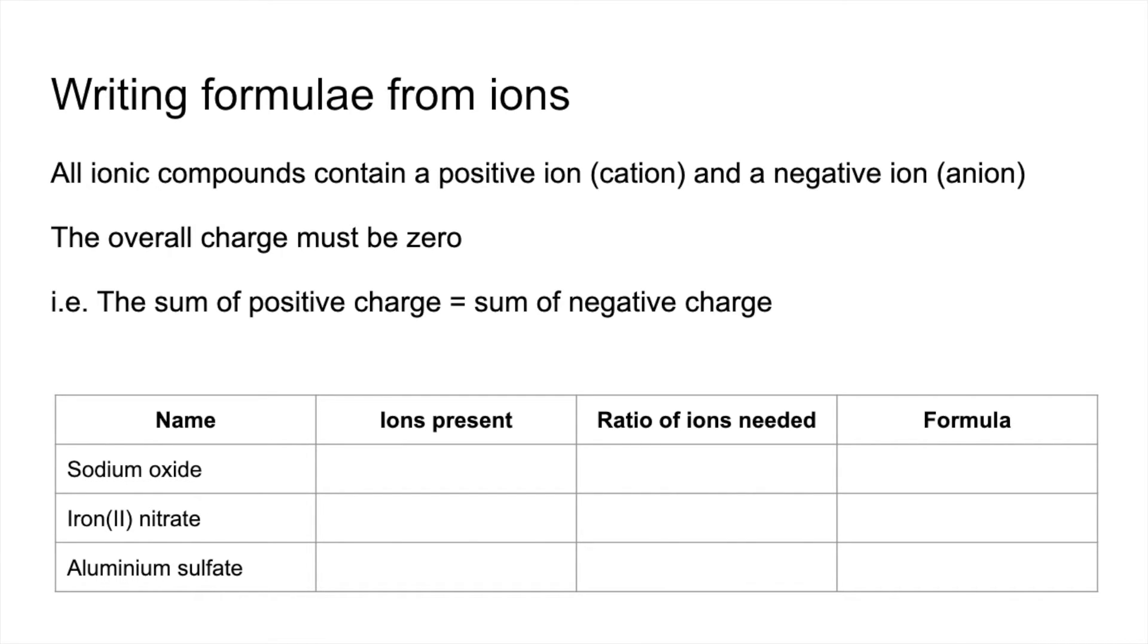So sodium oxide, the ions present are Na plus and O2 minus. You can see one of each of those is not going to give an overall charge of zero. So we need two Na plus ions for every O2 minus ion. And so the formula reflects that. It's Na2O.